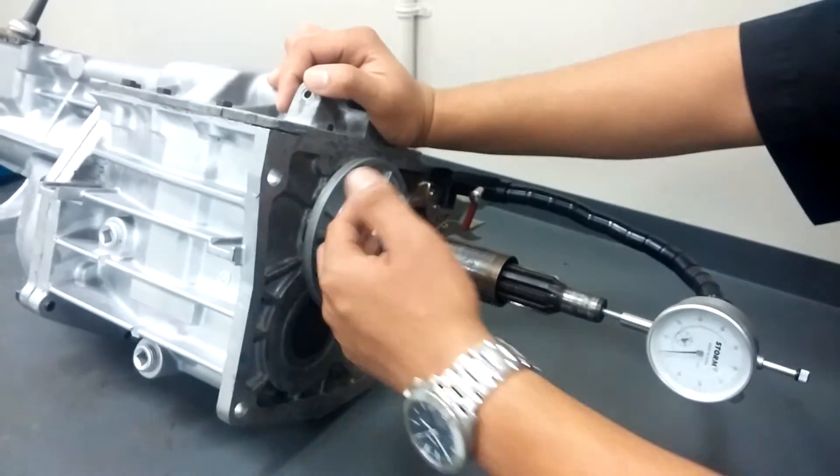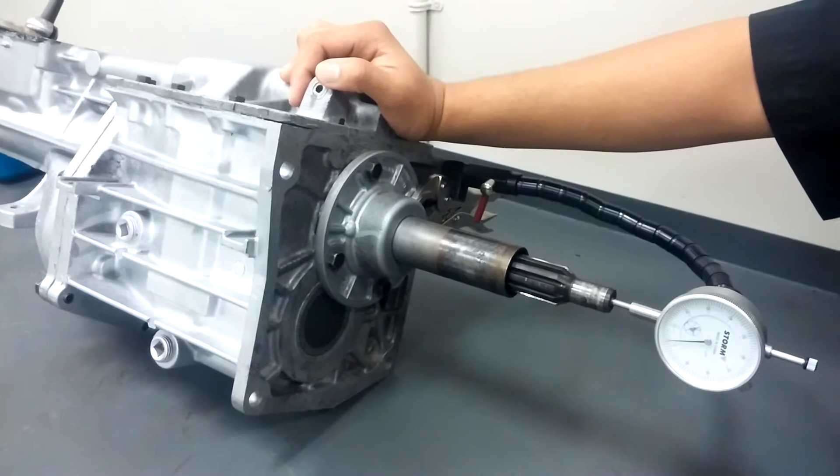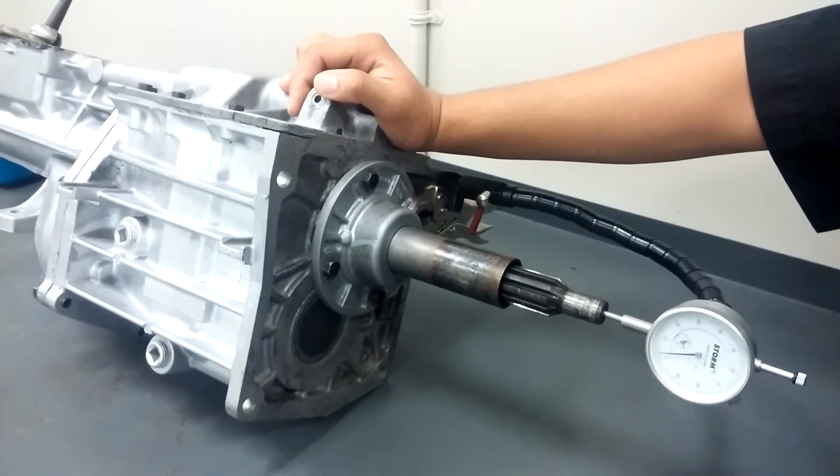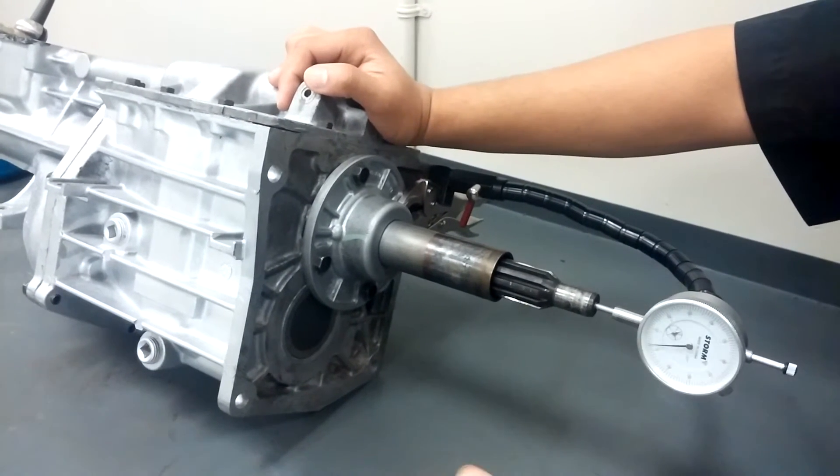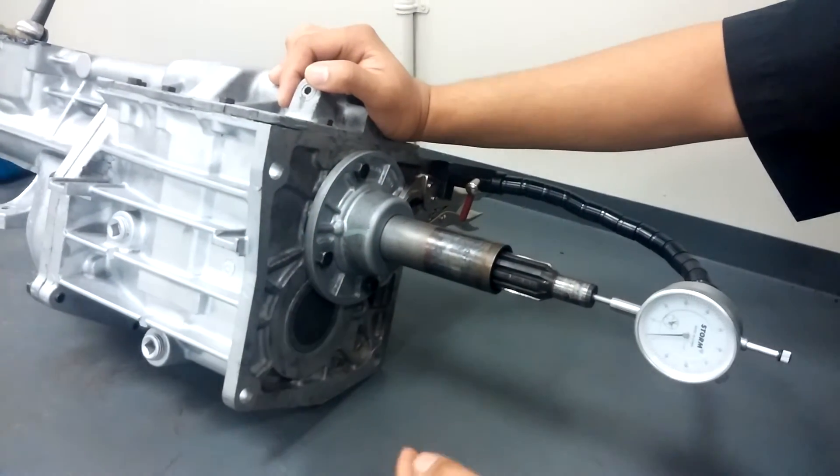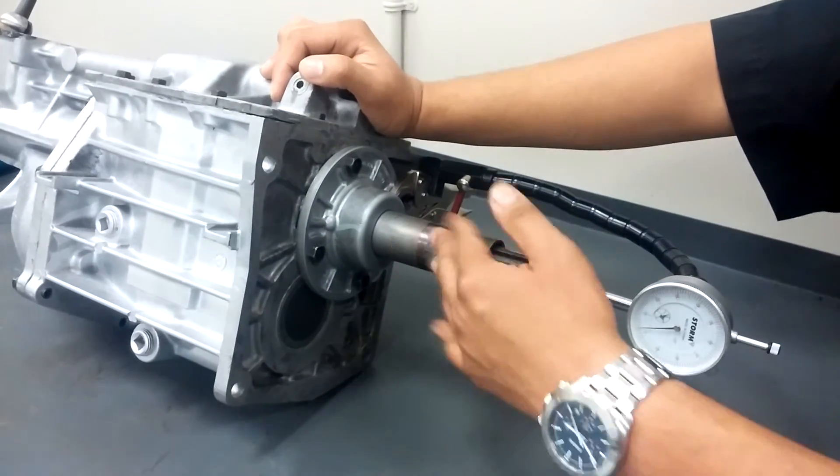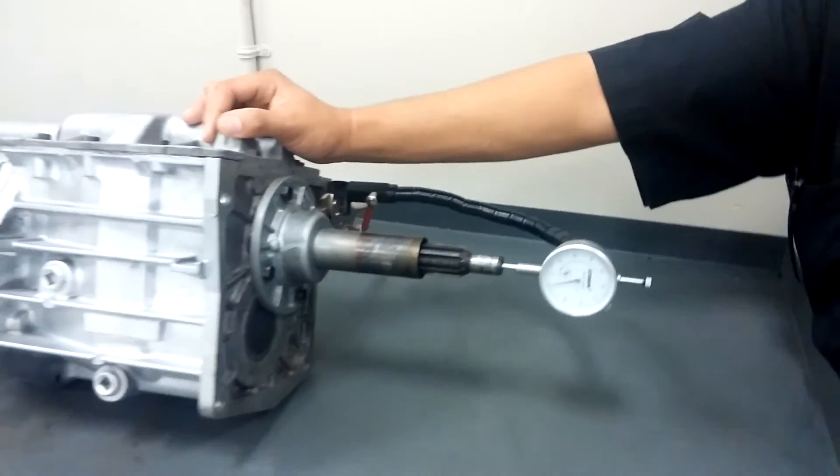Depending on what kind of shims are used, you might have to take a few off and put a thicker shim on. You're just going to have to find out by taking away or adding a thicker shim to correct the end play. You have to get at least 2 to 5 thousandths end play.